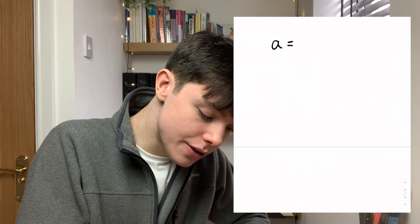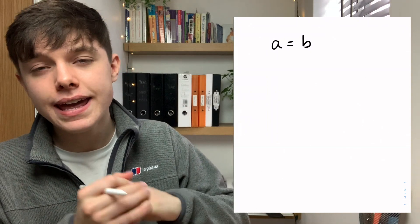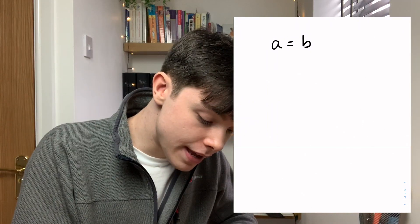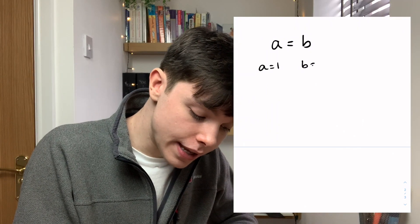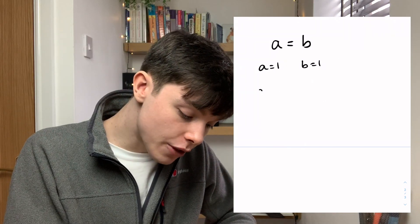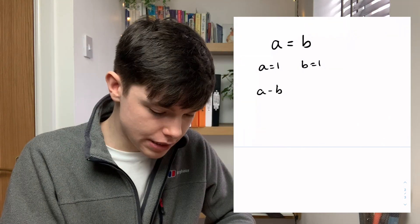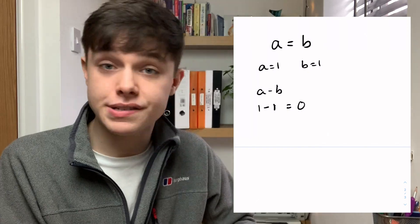Well let's think about it. a equals b. Let's say a equals 1. That means b also equals 1. So what's the value of (a - b)? It's going to be 1 - 1 which is 0.